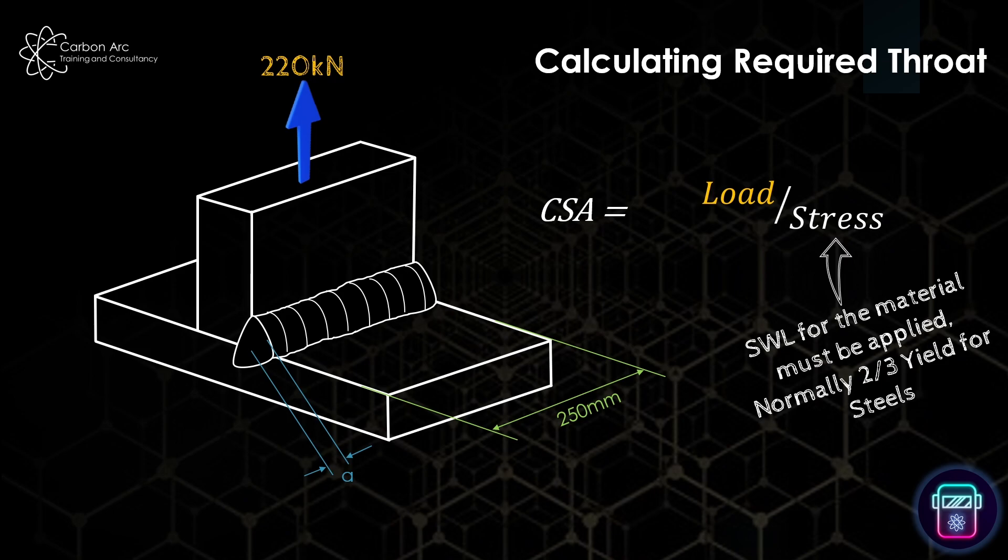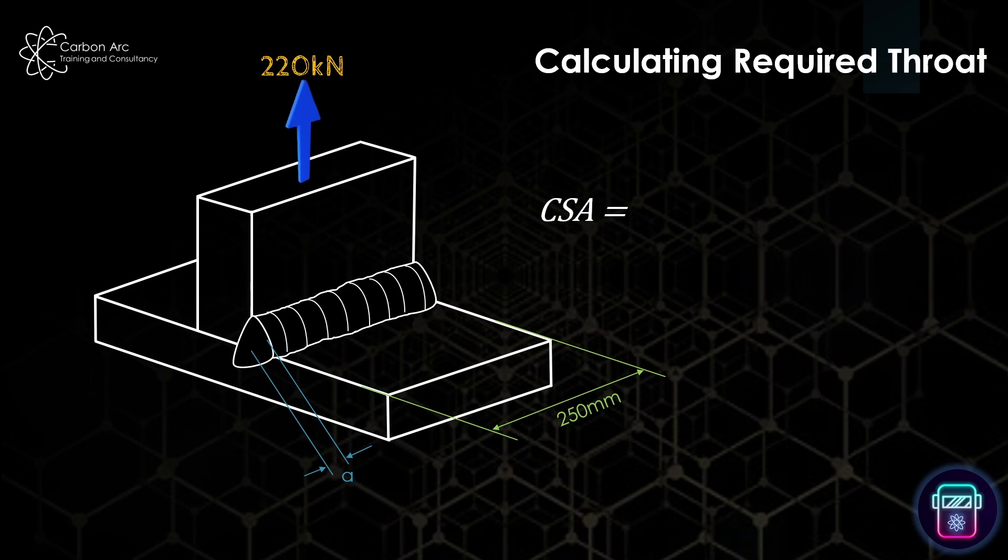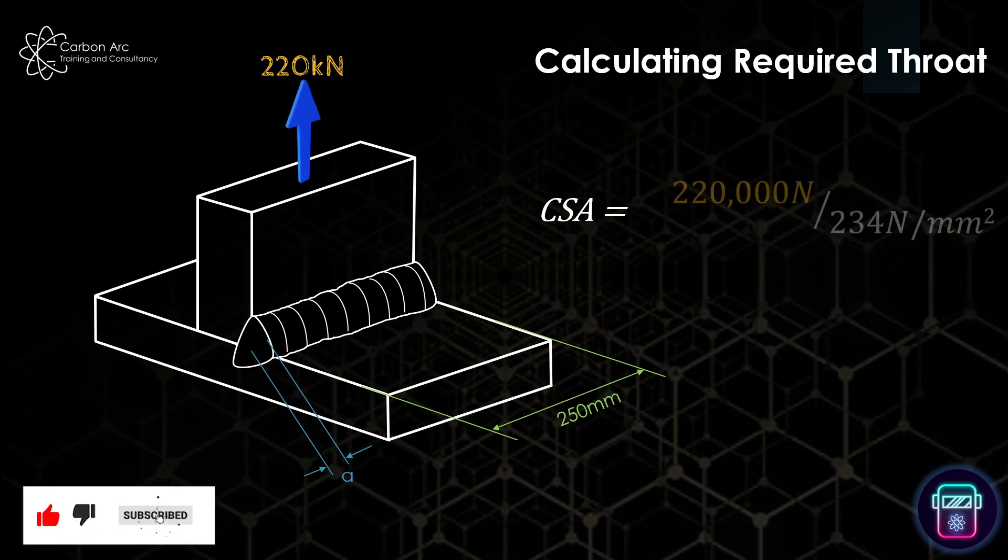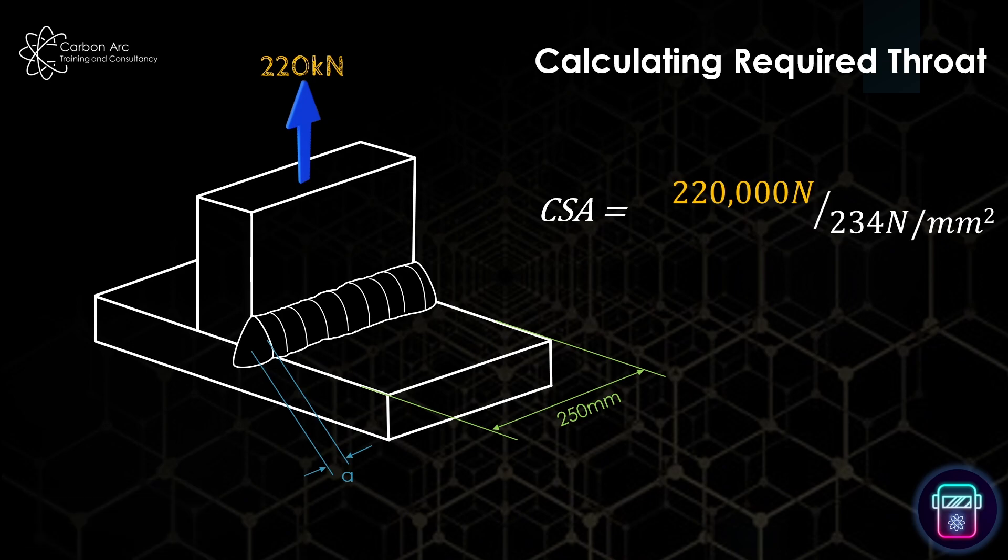So that's got a yield strength minimum of 355 newtons per millimeter squared. If I take that and put it into my equation, so I want 355 newtons per millimeter squared, but I only want two-thirds of that, so I can times it by 0.66. And that would give me my load of 220,000 newtons divided by an allowable stress of 234 newtons per millimeter squared.